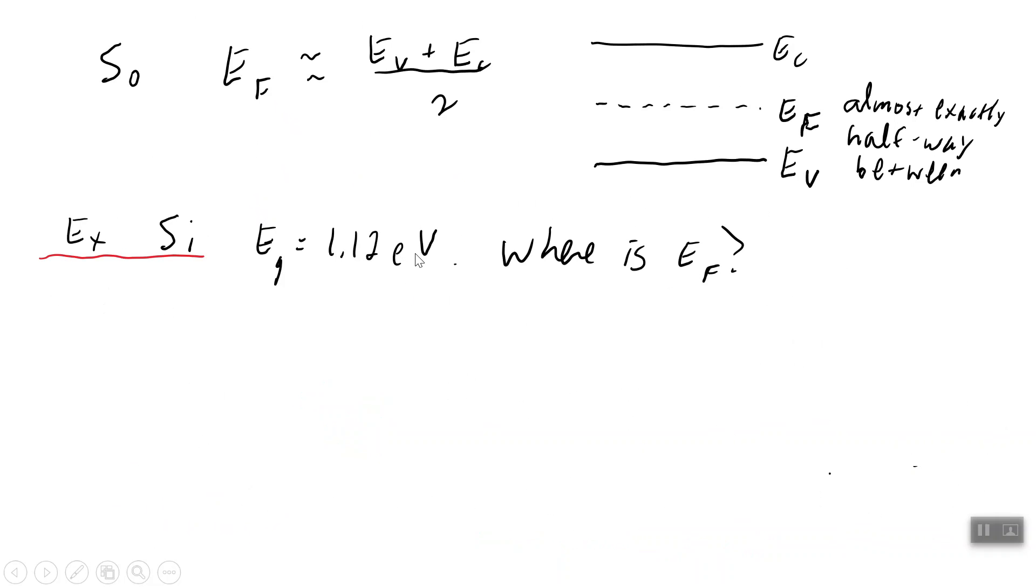For silicon, the energy gap, that's the difference between two levels, is 1.12 electron volts. Where is the Fermi energy located? So once again, we're not going to compute the Fermi energy in eV. We're going to compute how far away it is from a band edge. So we'll take this expression.